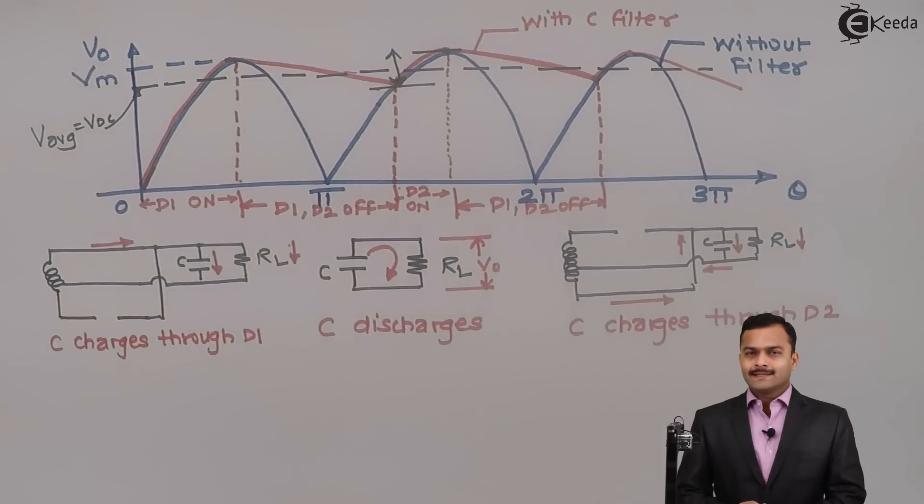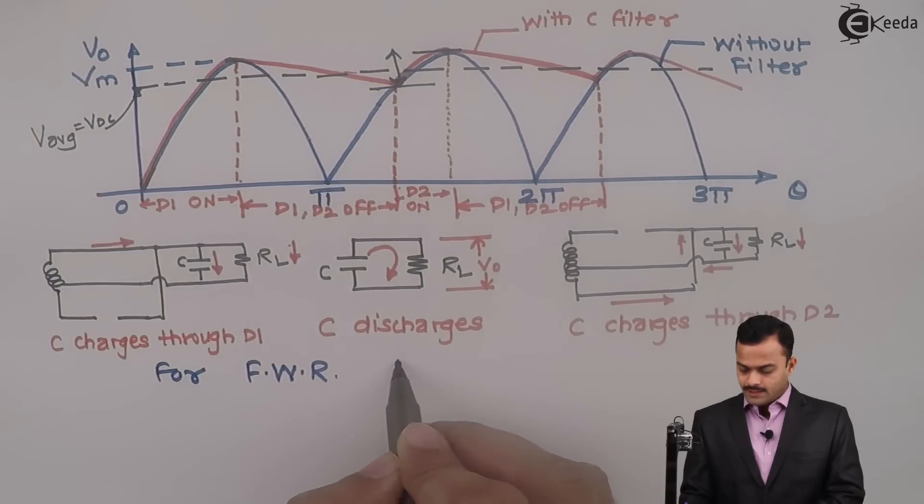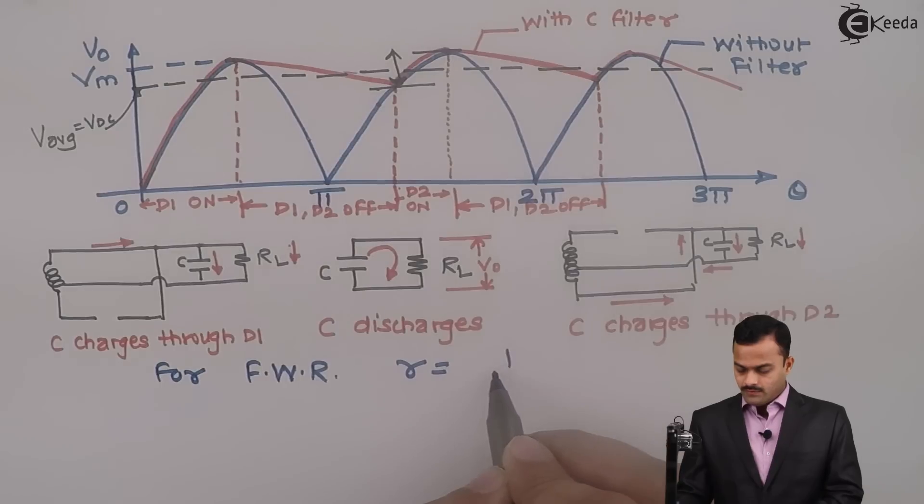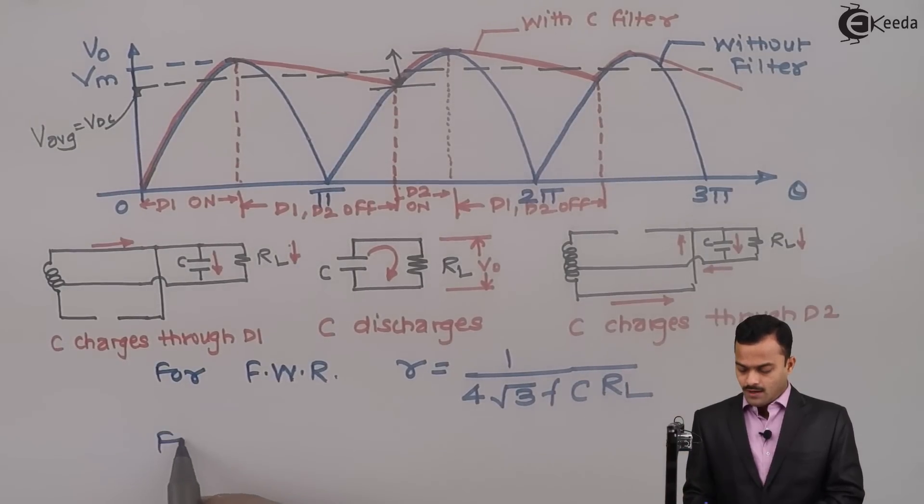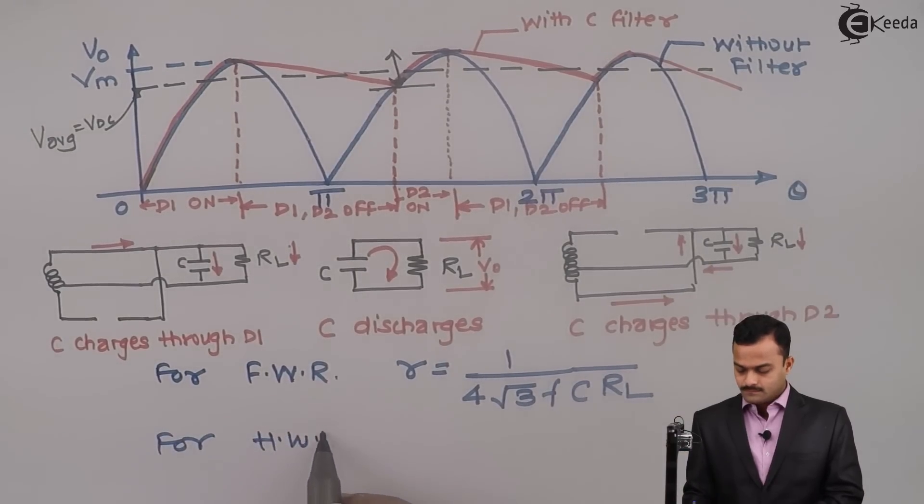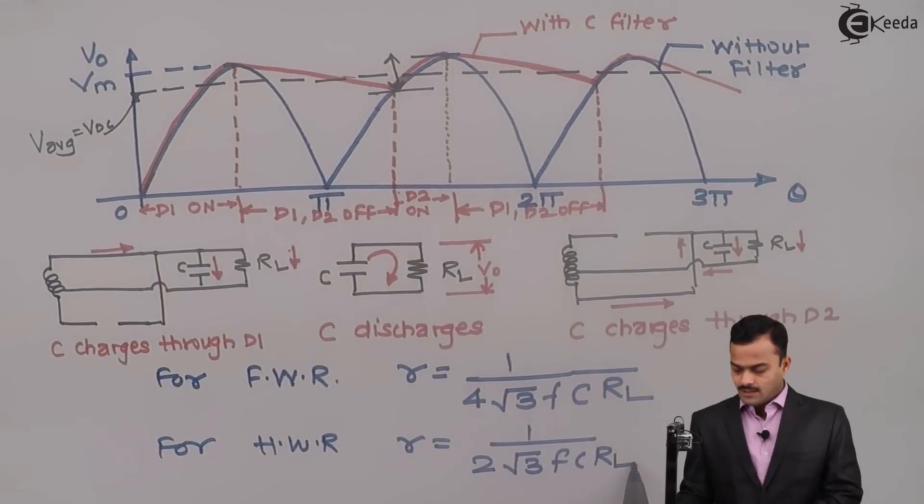Now we need to calculate the ripple content in a rectifier output voltage. For full wave rectifier, the ripple content is 1 upon 4 root 3 multiplied by frequency, C value and RL. And for half wave rectifier, we get R equal to 1 upon 2 root 3 F C RL.